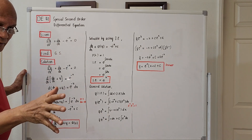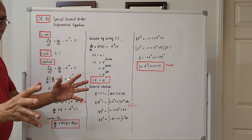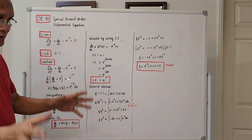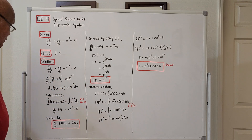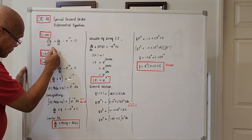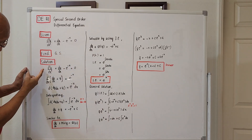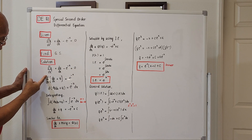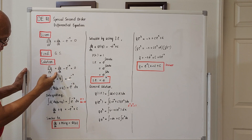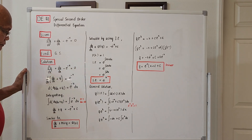Let's try to work out the solution. I will rewrite the given differential equation: d²y/dx² plus dy/dx minus e to the negative x equals zero.